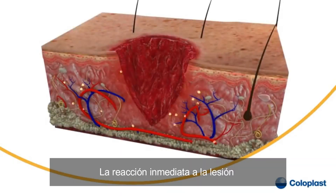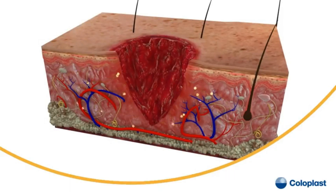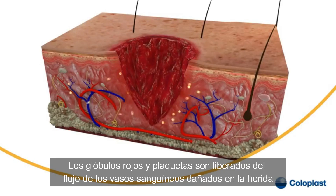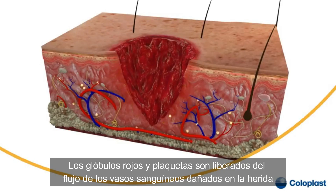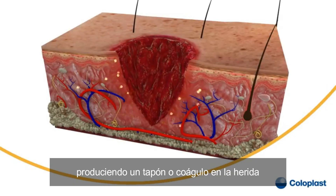The immediate reaction to injury is a contraction of the capillaries to reduce bleeding. Red blood cells and platelets released from damaged blood vessels flow into the wound, aggregate and produce a plug or clot in the wound.